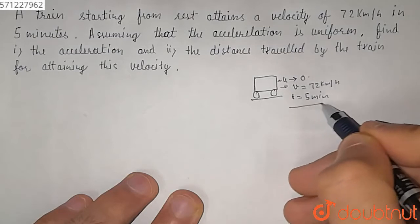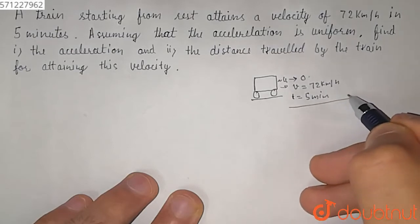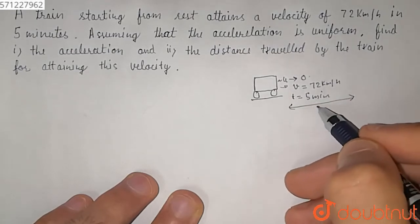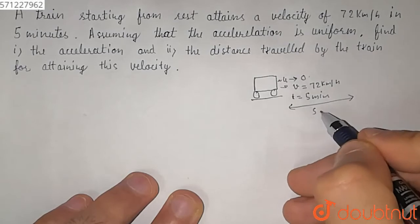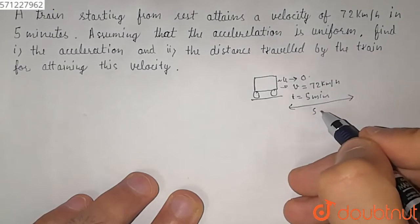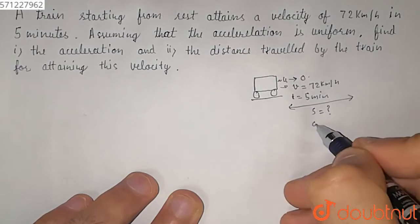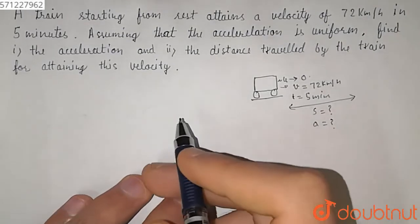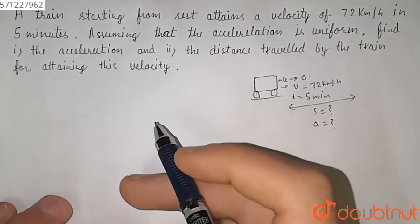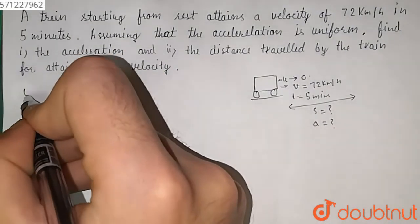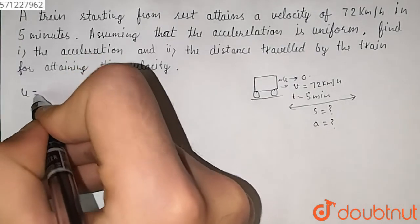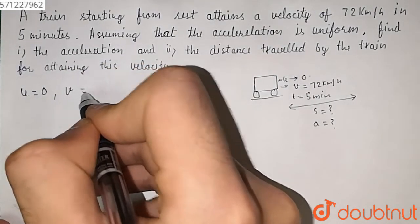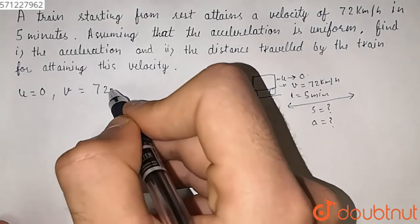So we have to find what distance it will cover in the time period of 5 minutes, and also the acceleration of this train. So here we have given u which is equal to 0, and v which is equal to 72 km per hour.